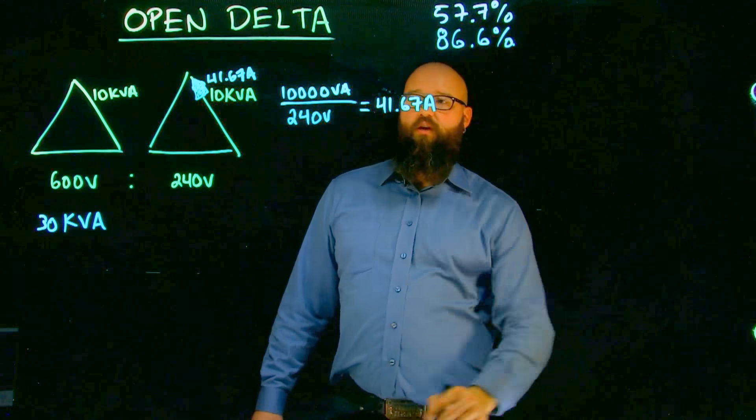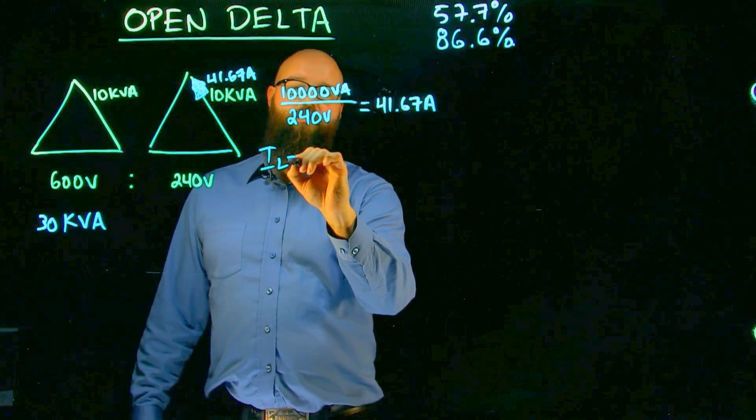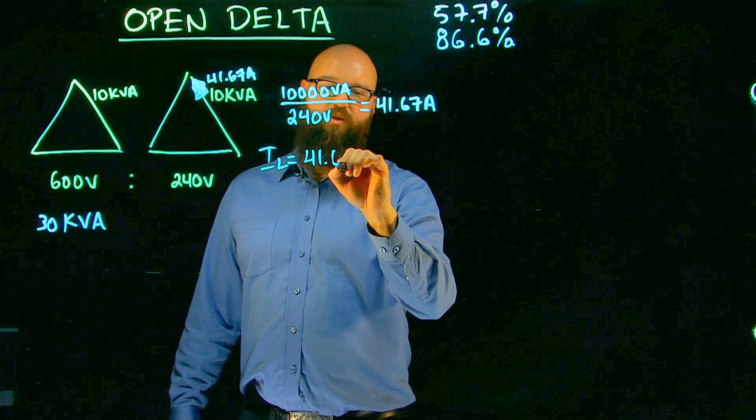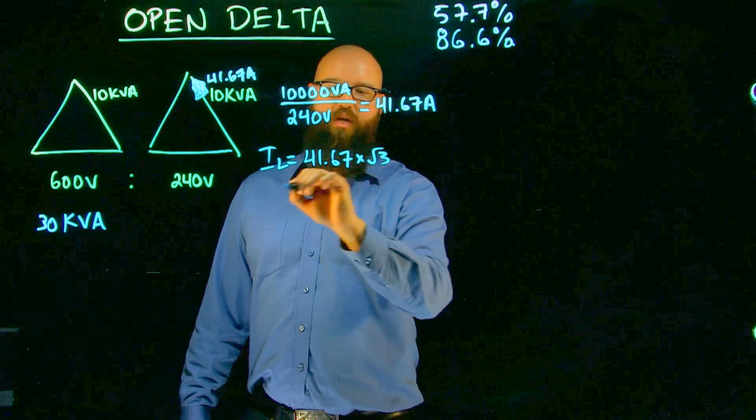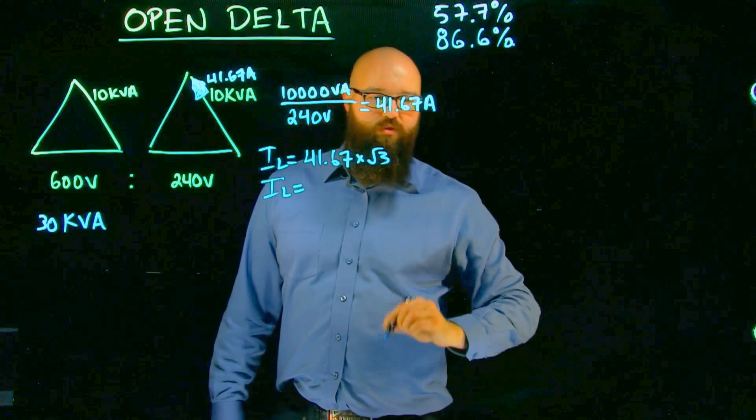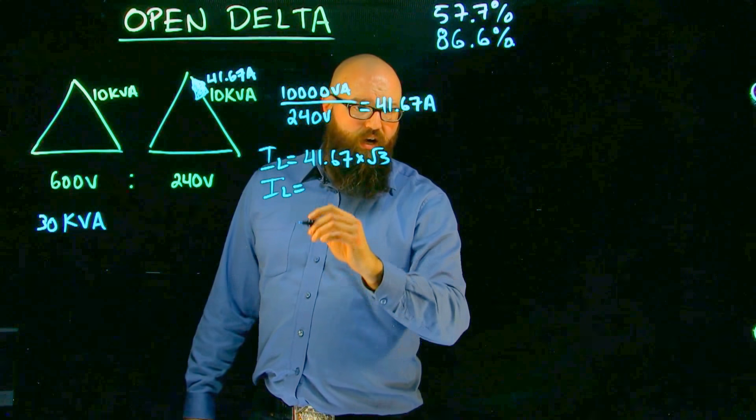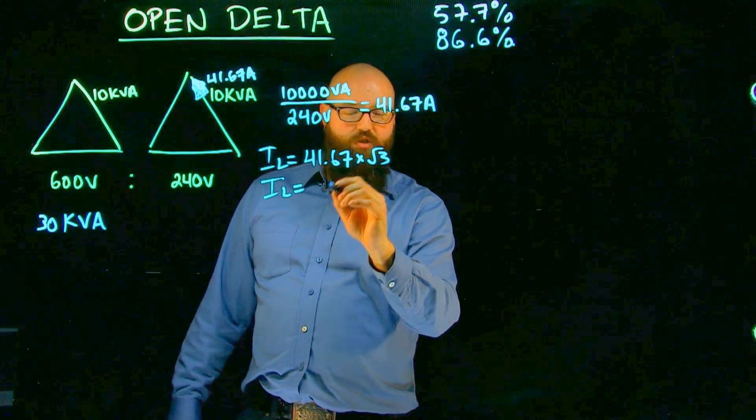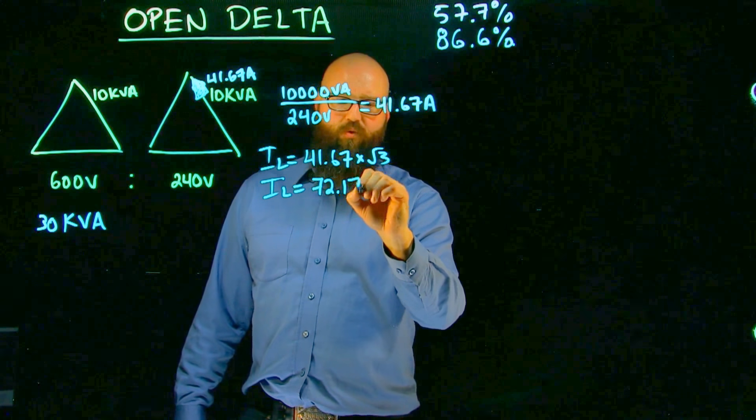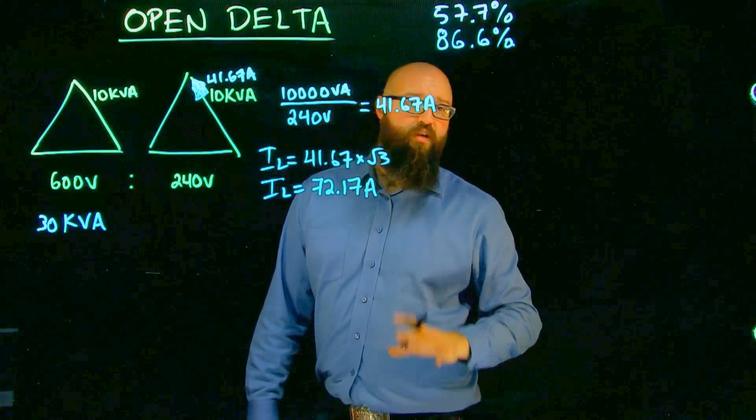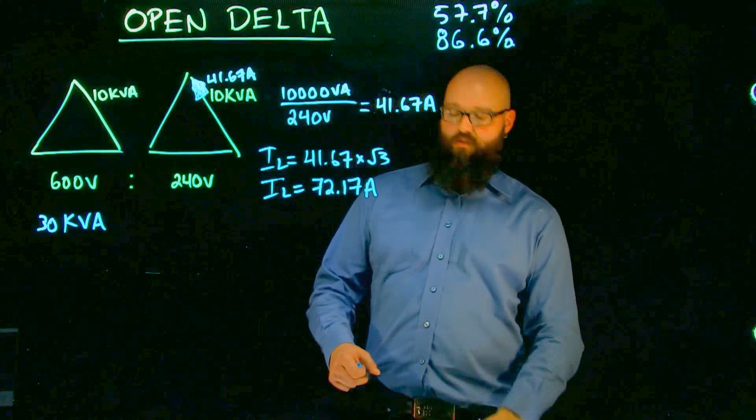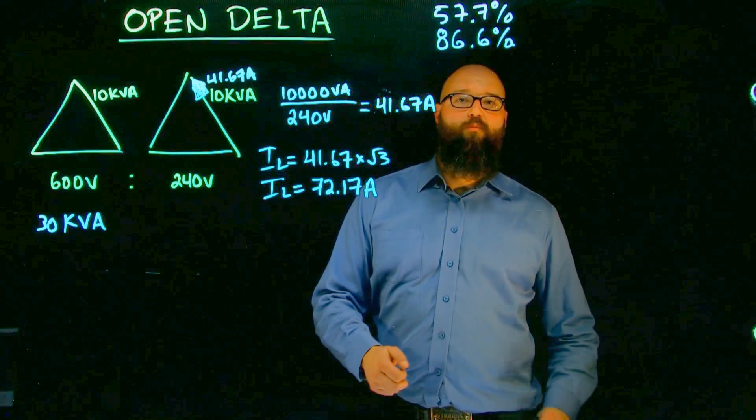Delta connection, it also means that my I line is equal to 41.67 times root 3. I line equals, we should see, around 72.17 amps. Okay, that's under normal circumstances with all three of our transformers connected in.